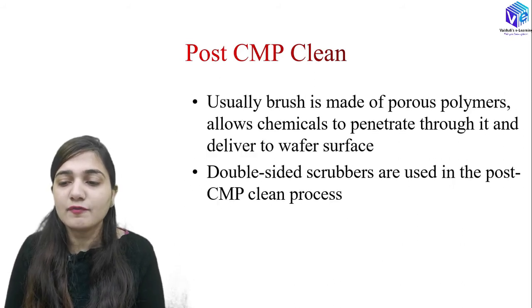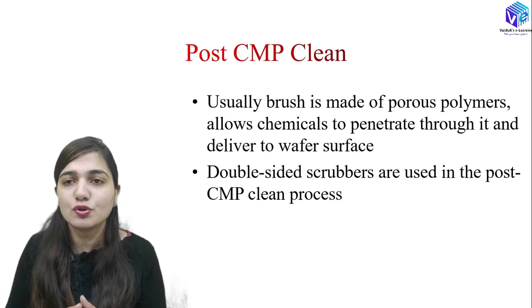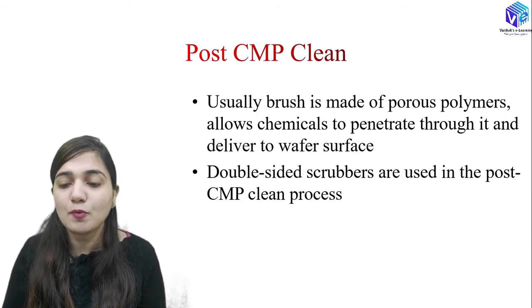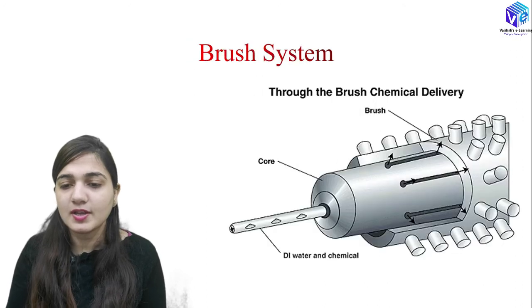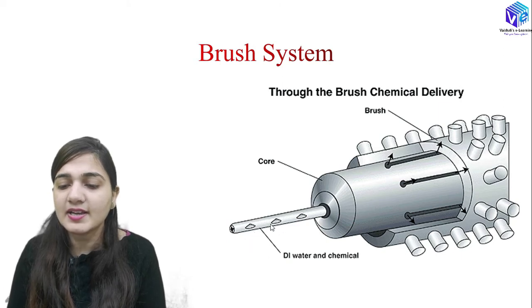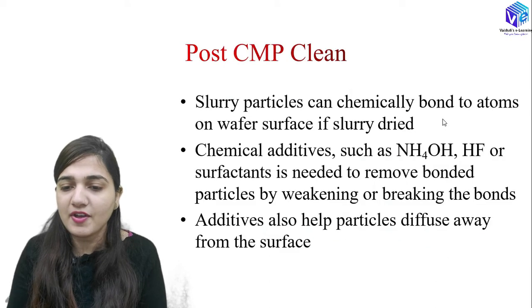The brush is made of porous polymers which allow the chemical to penetrate through it, and this is how it delivers these chemicals to the wafer. I am going to show you the structure of the brush also. We can use double-sided scrubbers in the post CMP cleaning process. You can see this is how our brush system looks: here we have the brush and the core, and from here we are sending the deionized water as well as the chemicals to the brush, which then sends them to the wafer.